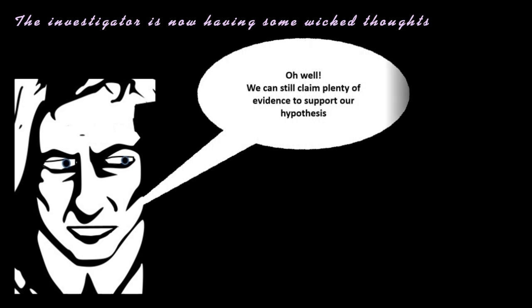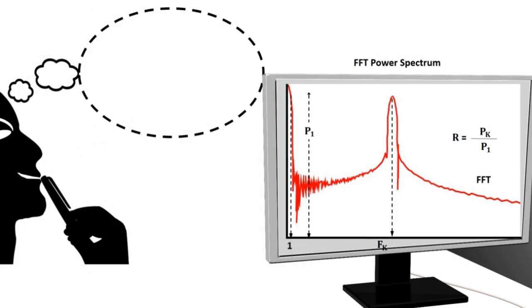Oh, well. We can still claim plenty of evidence to support our hypothesis. Just watch. If pk, and therefore r, did not decrease during the test, we'll decrease r artificially.